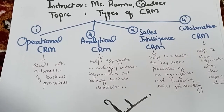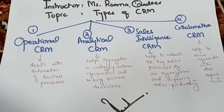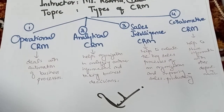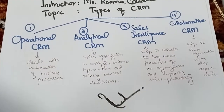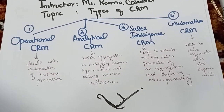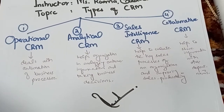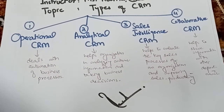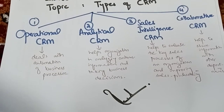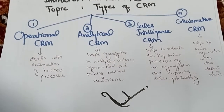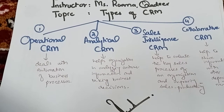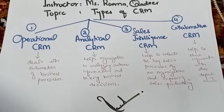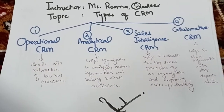Third is sales intelligence CRM. Sales intelligence CRM works similarly to marketing intelligence. Representatives from the organization visit the market and pretend to be normal customers. What they do is gather the most actual information from customers through face-to-face conversations. This sales intelligence information helps the organization to improve sales in a good way.